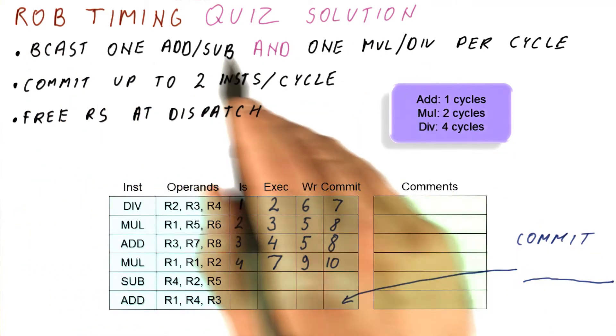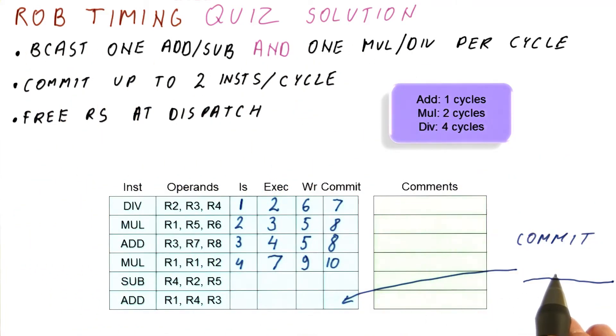Okay, let's work on the solution for our ROB timing quiz. The final question was, when does the add here, the last instruction, commit? To do that, we have to figure out what happens with the last two instructions.